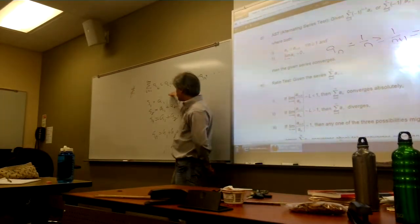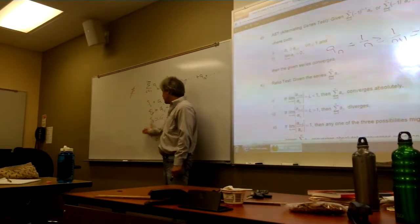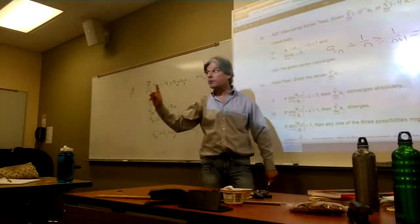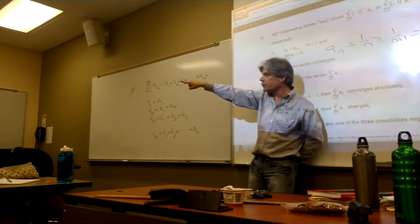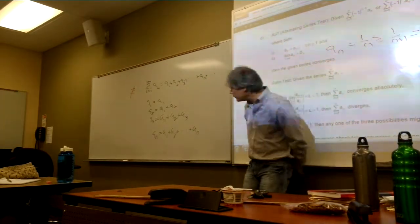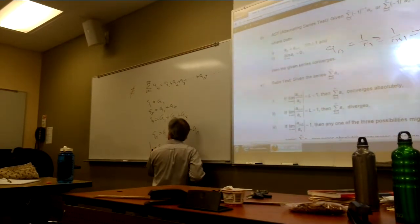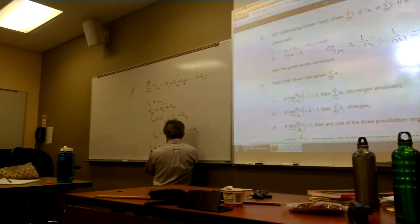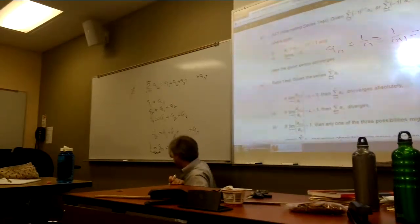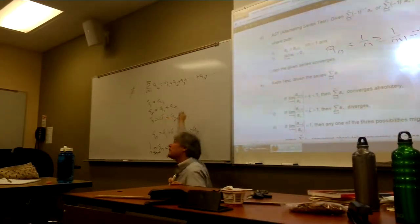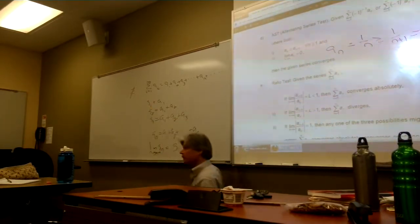My working definition: an infinite series converges if the sequence of partial sums converges. That's a cool definition because it brings the notion of convergence for an infinite series back to the convergence of a sequence — meaning the limit of the nth partial sum equals some fixed real number S, and that number S is actually the infinite sum as well.